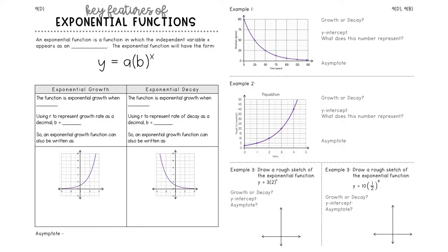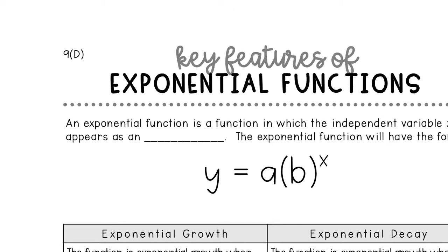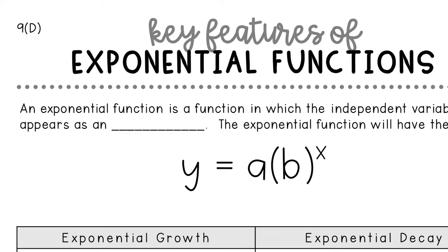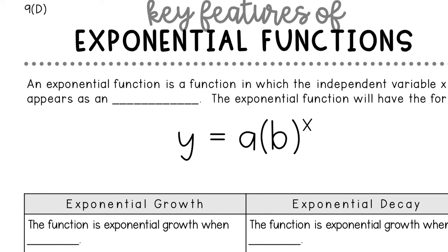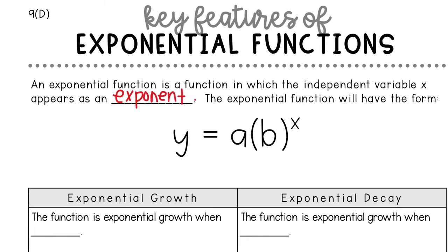So to keep it simple, we're going to start with its key features. So let's start with a definition. An exponential function is a function in which the independent variable x appears as an exponent. That's why it's called exponential. The exponential function will have the form y equals a parenthesis b to the x power. Each letter in this equation represents one of the key features of the graph.